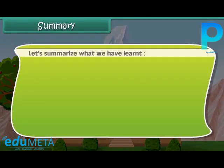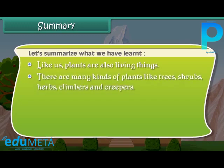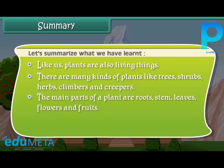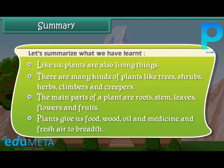Now friends, let us summarize what we have learned so far. Like us, plants are also living things. There are many kinds of plants like trees, shrubs, herbs, climbers, and creepers. The main parts of a plant are roots, stem, leaves, flowers, and fruits. Plants give us food, wood, oil, medicine, and fresh air to breathe.